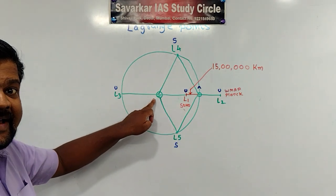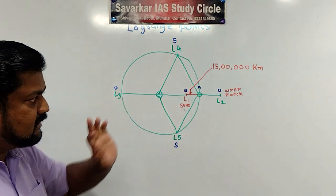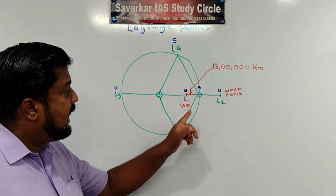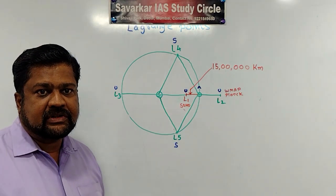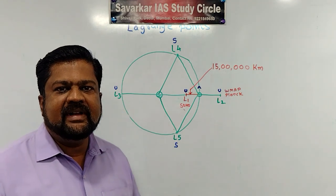First try to understand this diagram. So here this is Sun, this is Earth. Now Sun is having tremendous gravitational field as well as Earth is having gravitational field. Because no doubt, compared to Sun, Earth is almost having negligible mass.